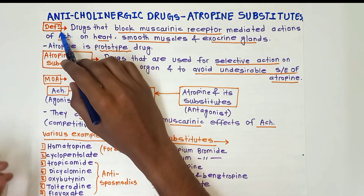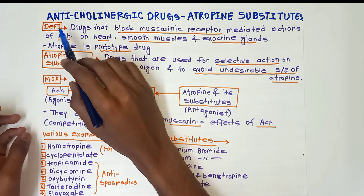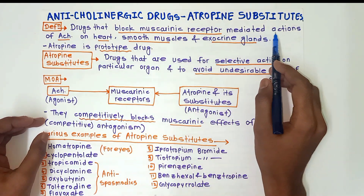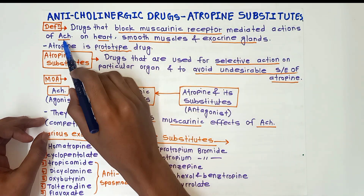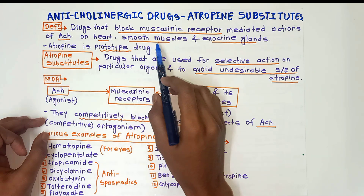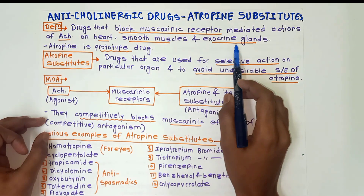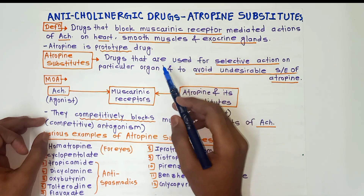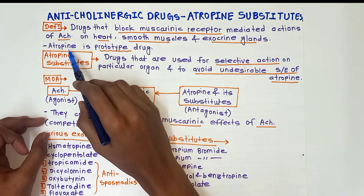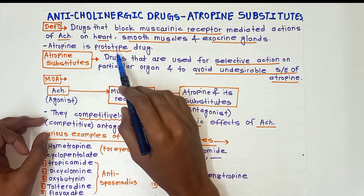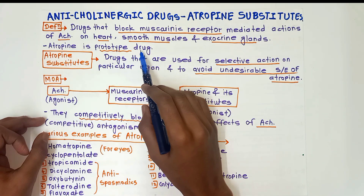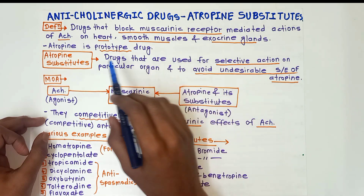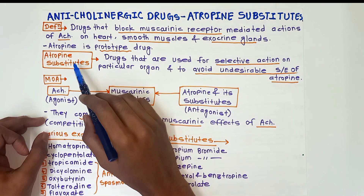First of all, the definition of anticholinergic drugs: the drugs that block the muscarinic receptor-mediated actions of acetylcholine on heart, smooth muscle, and exocrine glands are called anticholinergic drugs. Atropin is the prototype drug of anticholinergic drugs.